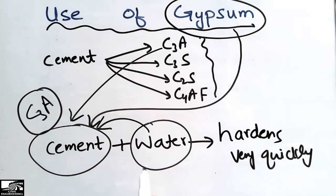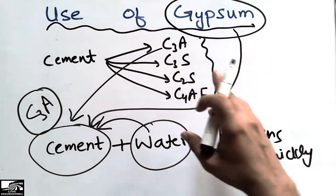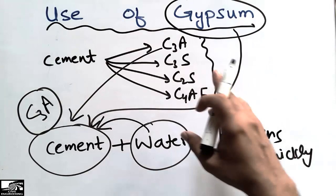And it can be used in a good workable mix. So that's why we use gypsum in the cement manufacturing. This was all about today's topic.